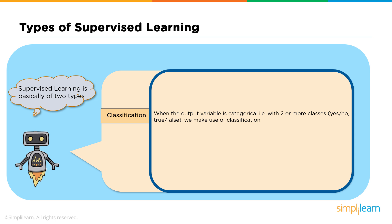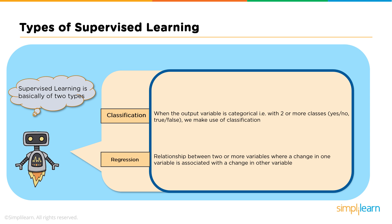Supervised learning can be further divided into classification and regression. It is a classification problem when the output variable is categorical — such as red or blue, disease or no disease, male or female. It's a regression problem when the output variable is a real or continuous value, for example salary based on work experience or weight based on height. So, if I ask 'will I get a salary raise or not,' that's classification. But if I ask 'how much salary raise will I get,' that is regression.